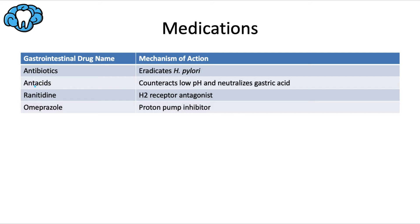An important drug interaction to know: antacids, as well as dairy products and other agents containing divalent ions like calcium and iron, will chelate or bind and interfere with tetracycline, erythromycin, and some other antibiotics, limiting their absorption and subsequently their effectiveness. Keep that in mind — when someone's taking antacids, it might impact antibiotic efficacy.